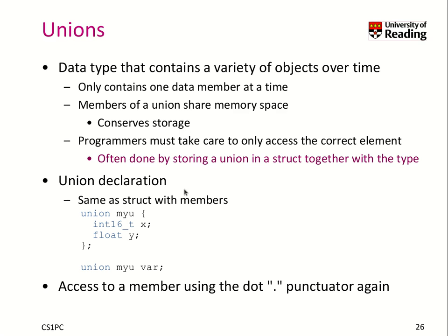Unions are similar to structs to some extent, particularly in the way you declare them. So we can create any number of members to a union similar to a struct — so instead of saying struct, we can say union. That looks syntactically exactly the same. However, the semantic meaning is different. The semantics of a union is that you can store only one element of one of its members at a time.